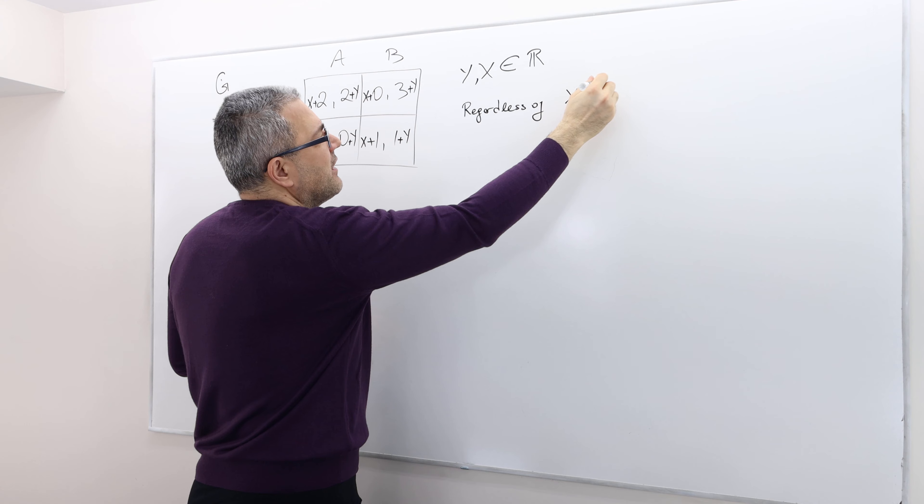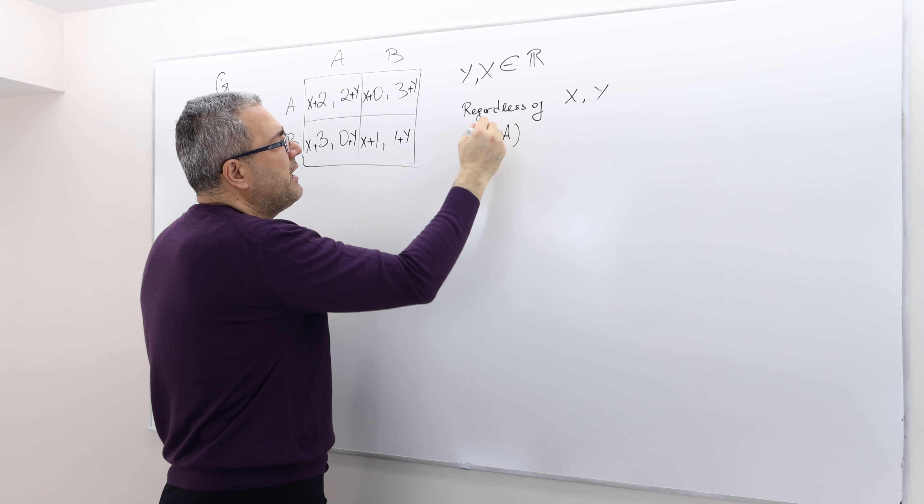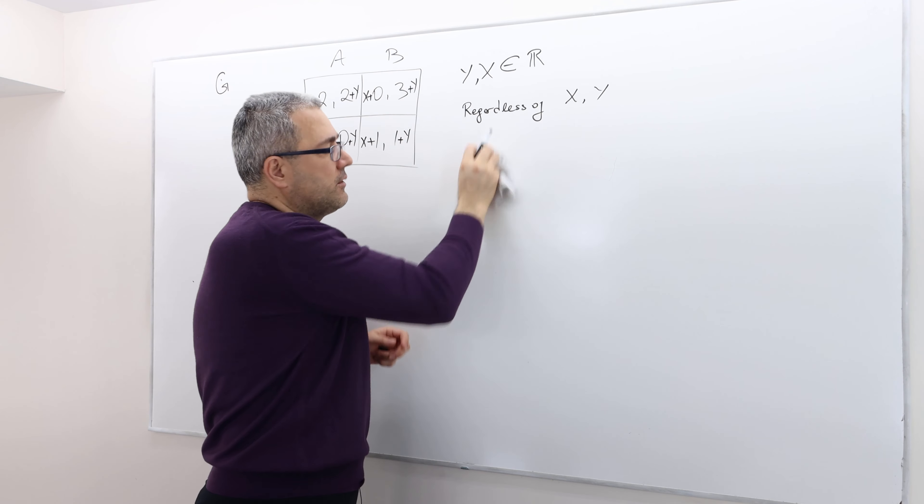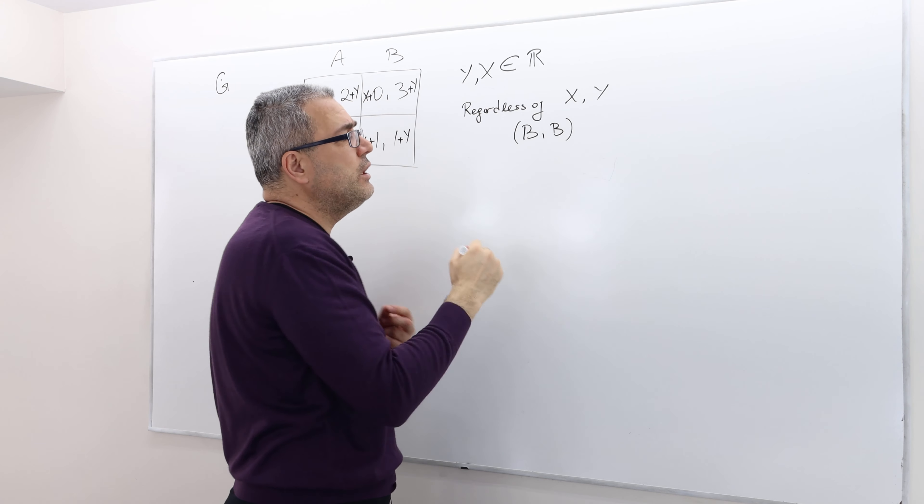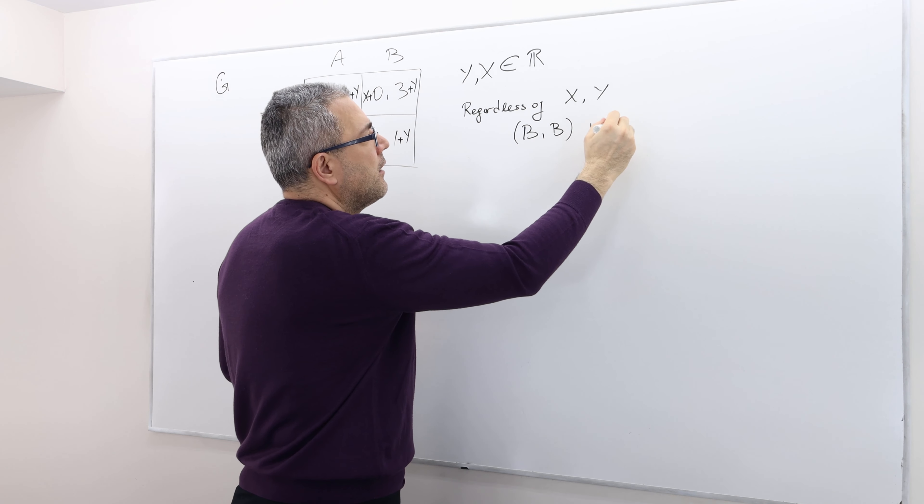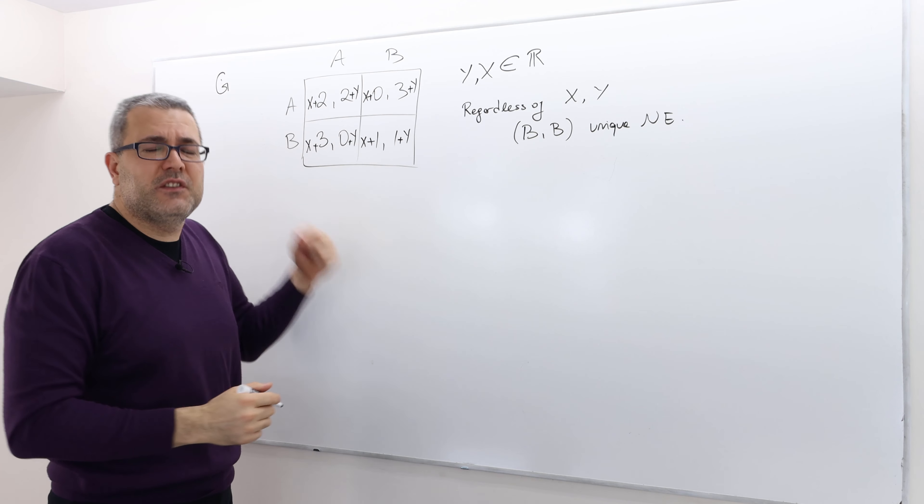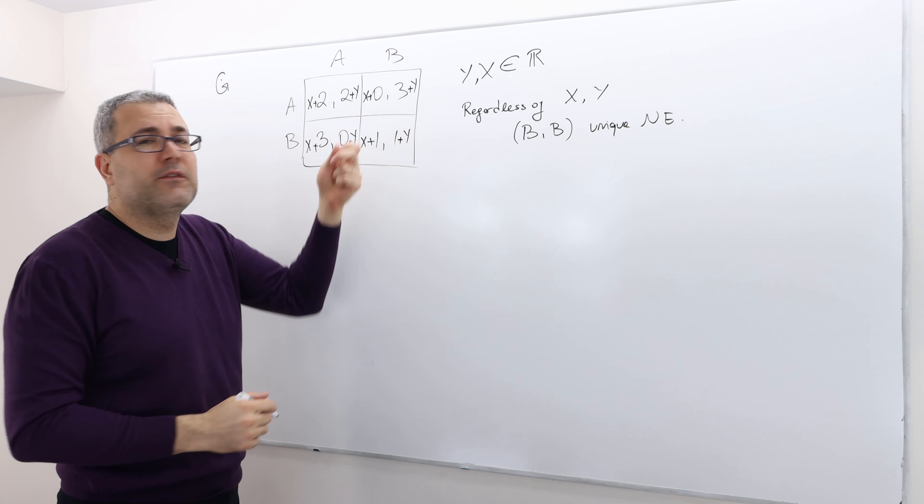the value of X and Y, BB is still going to be the unique Nash equilibrium. And in fact, because B is still strictly dominant strategy for player one and for player two.